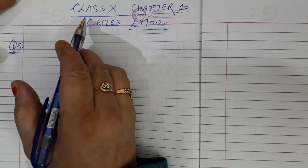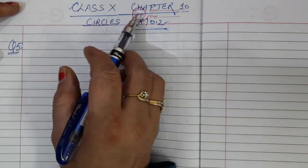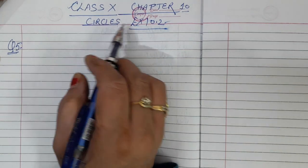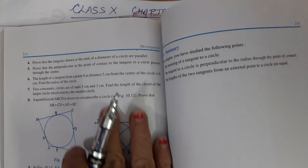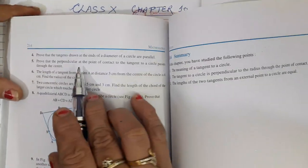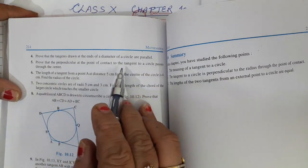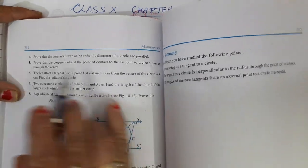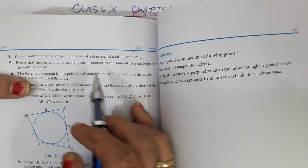Welcome everyone. Today we will study Chapter 10 of Class 10 Circles, Exercise 10.2, Question Number 5: Prove that the perpendicular at the point of contact to the tangent to a circle passes through the center.